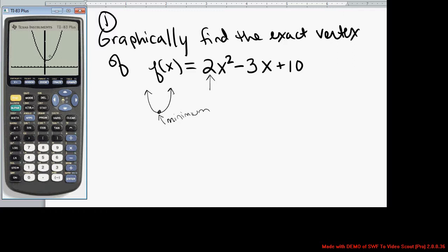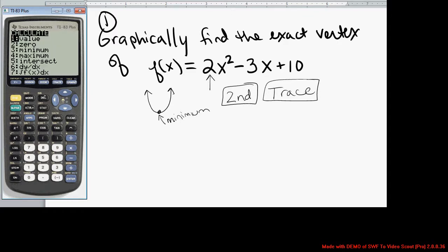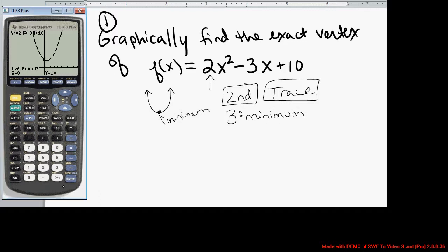I'm trying to find this minimum point, that vertex of the parabola. In the calculator, to do this, you're going to hit second and trace. Select second trace, and you see many options here. One of them is minimum. We know that the vertex in this case is a minimum, so we're going to select option 3.